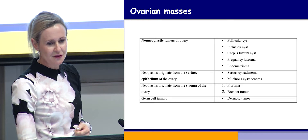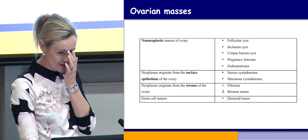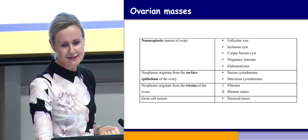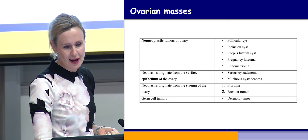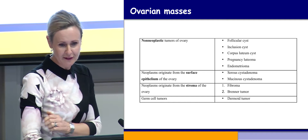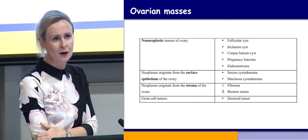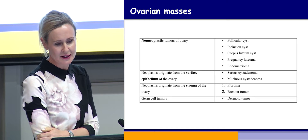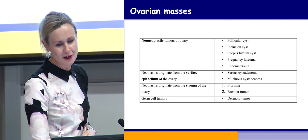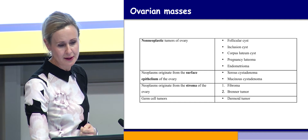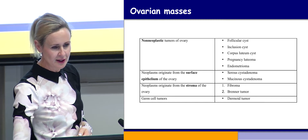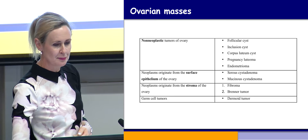Looking specifically at the ovary, non-neoplastic tumours include follicular or inclusion cysts, corpus luteal cysts, pregnancy luteoma, or endometrioma. Neoplasms originate from the surface epithelium — serous or mucinous cystadenoma, or carcinoma if malignant. Neoplasms arising from the stroma include fibroma and Brenner tumour, both of which can occasionally become malignant. And germ cell tumours include dermoids, which can sometimes also be malignant.